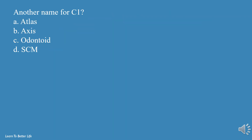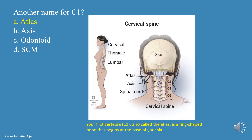Another name for C1? a. Atlas, b. Axis, c. Odontoid, d. SEM. The answer is a, Atlas. Your first vertebra, C1, also called the Atlas, is a ring-shaped bone that begins at the base of your skull.